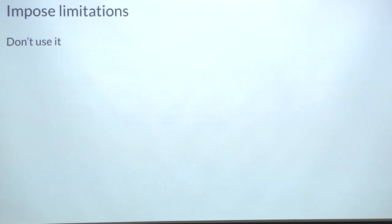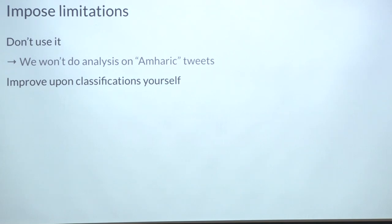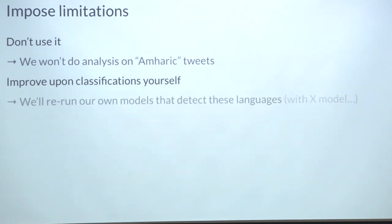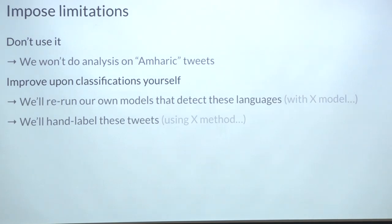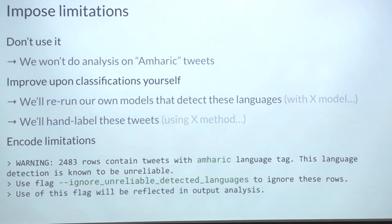There are options such as: just don't use it. For example, you could choose not to do analysis on tweets labeled Amharic, or to not use this language category altogether. This wasn't an option for us because we cared about these tweets. You can also improve upon these classifications yourself — if you find a classification scheme not to work, you can simply not use it and do something else. You can rerun your own models that detect these languages, or hand-label these tweets, documenting that you used a specific model and method. Because documenting these processes is really critical for establishing context in future uses.